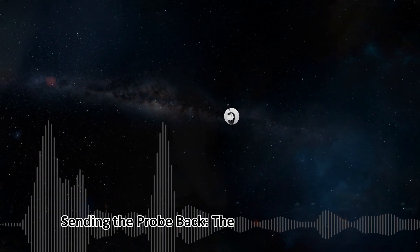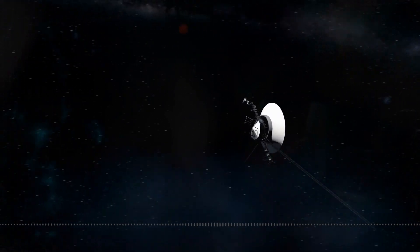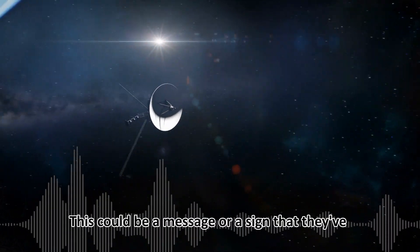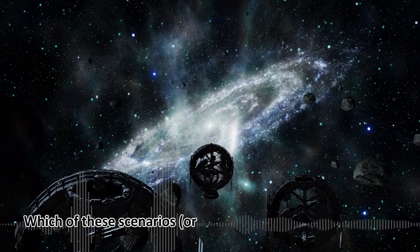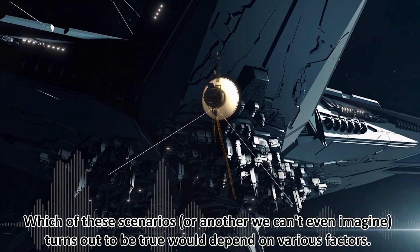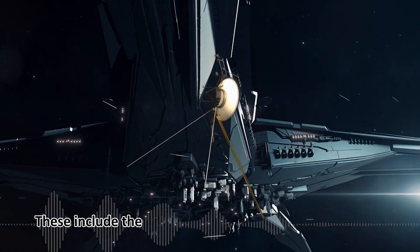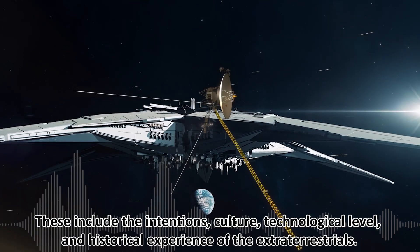Sending the probe back: the aliens might modify or reboot Voyager and send it back to Earth. This could be a message or a sign that they've noticed our attempt to explore space. Which scenario turns out to be true would depend on various factors, including the intentions, culture, technological level, and historical experience of the extraterrestrials.